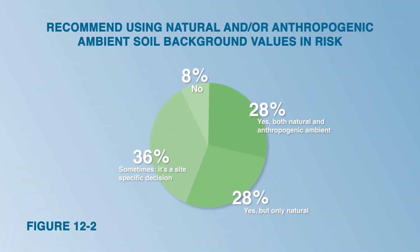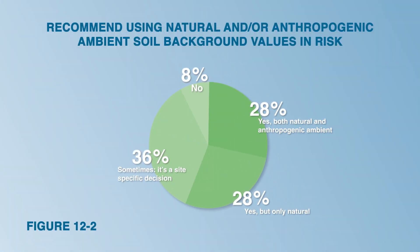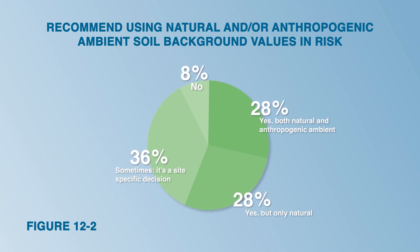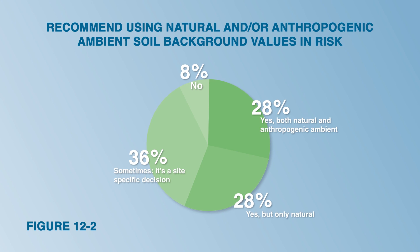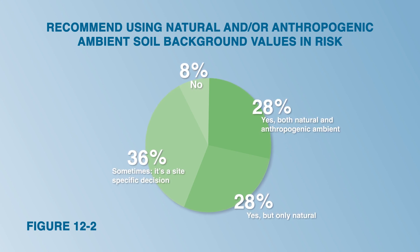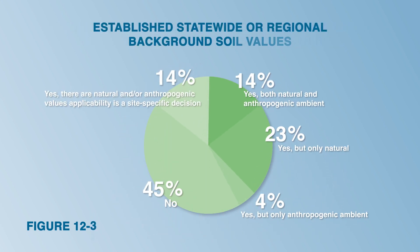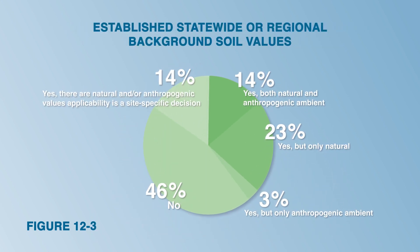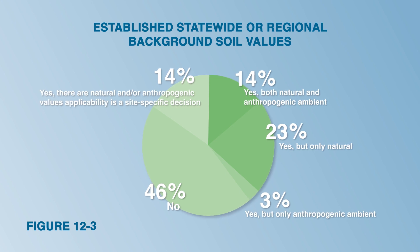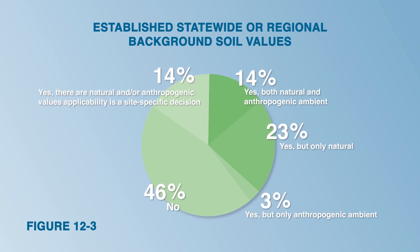One of the state survey questions asked if state agencies recommend the use of soil background values in risk assessment. Out of 38 state responses, Figure 12-2 from the guidance shows 92% recommended the use of background values in risk assessment. Half of the surveyed states established statewide or regional soil background values for some chemicals, as shown in Figure 12-3.